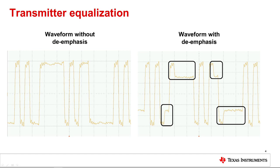As you can see in the waveform on the left, without de-emphasis the signal level of all bit combinations remains the same. The waveform on the right shows the result of adding de-emphasis to the signal. You can see the first transition bit remains at the nominal swing level and subsequent bits have a lower signal amplitude.